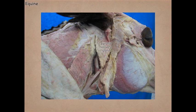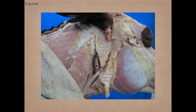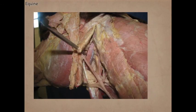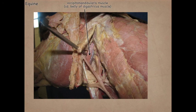Here we've dissected the parotid salivary gland further to expose the mandibular salivary gland, which is tucked a little deeper and generally under the mandible. In the horse, we only have the polystomatic sublingual salivary glands. Deep to the salivary glands is the digastricus muscle. The portion originating from the paracondylar process and inserting on the body of the mandible is the occipitomandibularis — the caudal belly of the digastricus — and it is the only muscle that acts to open the jaw.